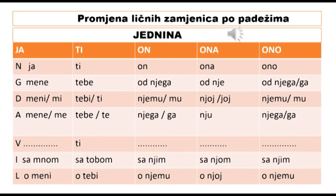Promjena ličnih zamjenica po padežima – jednina. Nominativ: ja; genitiv: od mene; dativ: meni ili mi; akuzativ: mene ili me; vokativ: nema; instrumental: sa mnom; lokativ: o meni. Za zamjenicu ti: nominativ ko – ti; genitiv: od tebe; dativ: tebi ili ti; akuzativ: vidim tebe ili vidim te; vokativ: hej, ti; instrumental: sa tobom; lokativ: o tebi.